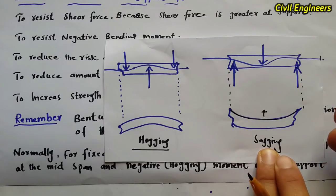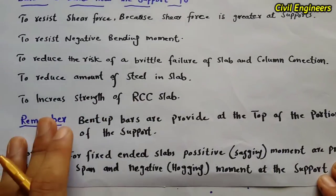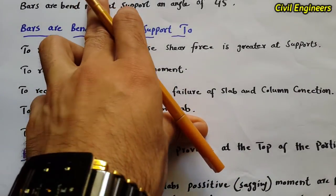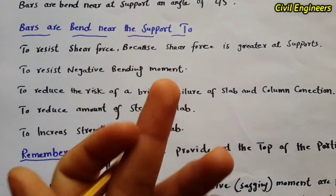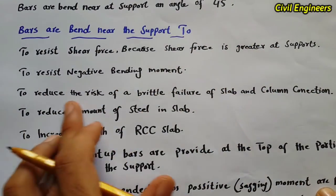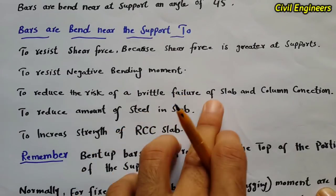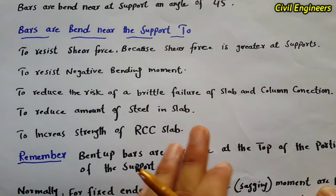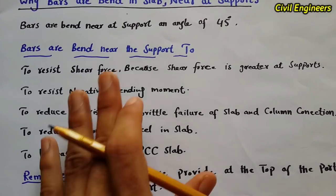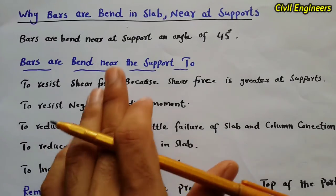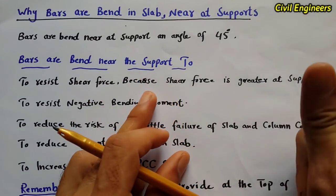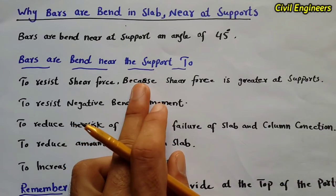This is the important topic for today. We bent up bars in the slab near its support to resist the shear force, to resist the bending moment, and also to reduce the brittle failure of the slab and column connection. These are the important points. Therefore, we provide bent-up bars near the support in the slab, and it should be at 45 degrees. For more videos, please like and share this video with your friends. Thanks for watching, bye bye.